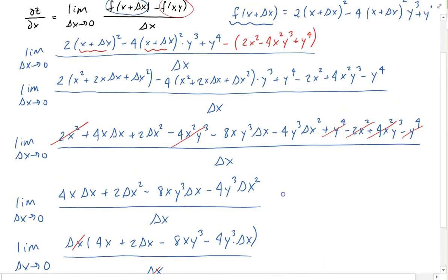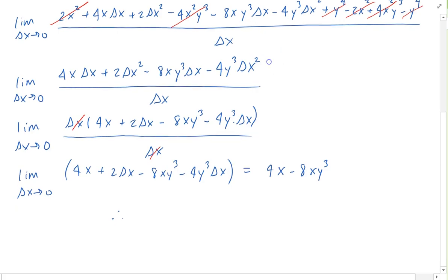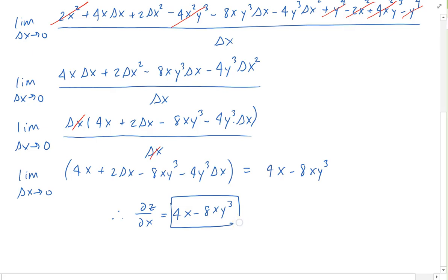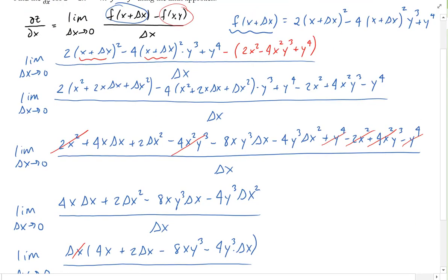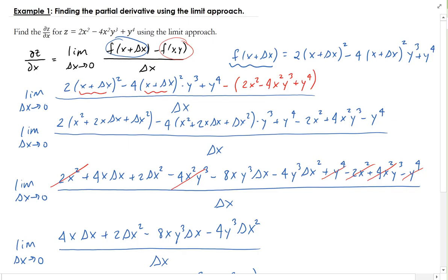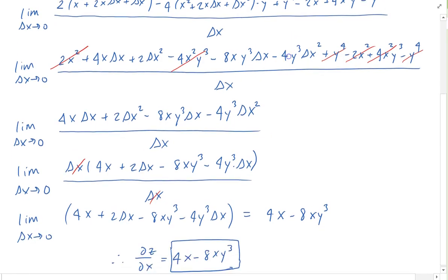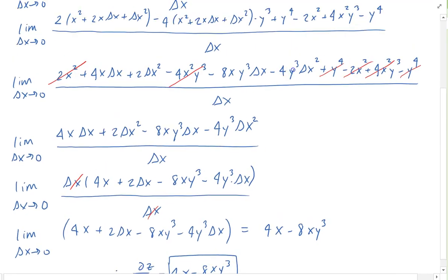Therefore, the partial of z with respect to x is equal to four x minus eight x y cubed. There's a much easier way to do this, and I'm going to demonstrate that in the next few examples. So this was taking the partial z with respect to x using the limit definition, and we end up getting four x minus eight x times y cubed.